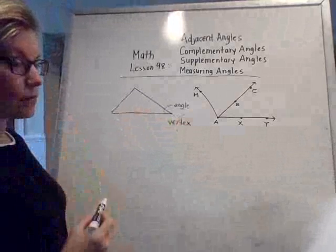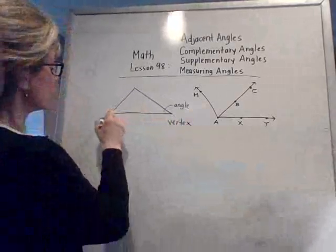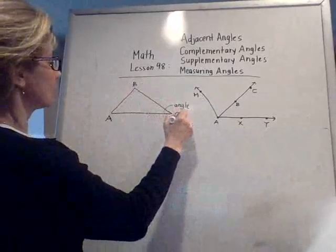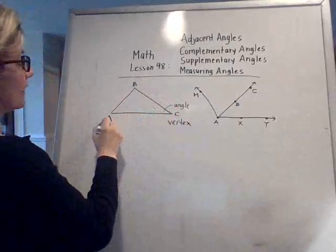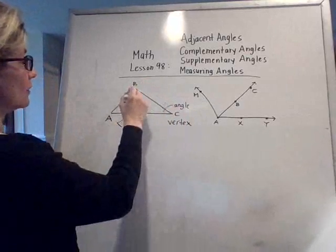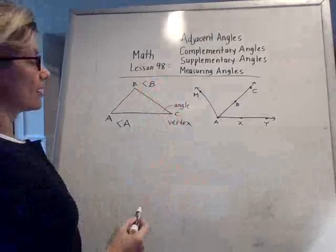And how will we label angles? Well, we use letters, so we can name this A, B, and C. So if we wanted to write angle A, we would write angle A, or angle B would be angle B, and so on.